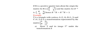So, if R is a positive quarter turn about the origin, the matrix for R is [0, -1; 1, 0]. And the matrix for the inverse of R, which is R⁻¹, is [0, 1; -1, 0]. And this means that if we take the inverse of R and multiply by R, we are supposed to get the identity matrix.